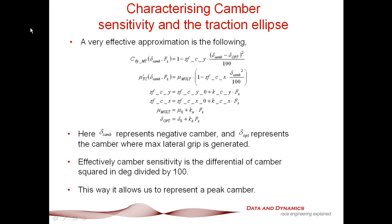A very useful approximation we have found is that the camber multiplier equals 1 minus SFCY multiplied by (delta camber minus delta optimum) on 100 squared. SFCY gives a parabolic curve with its peak value of 1 at your dynamic camber. What delta optimum represents is the camber at which the tire is going to generate its maximum grip.